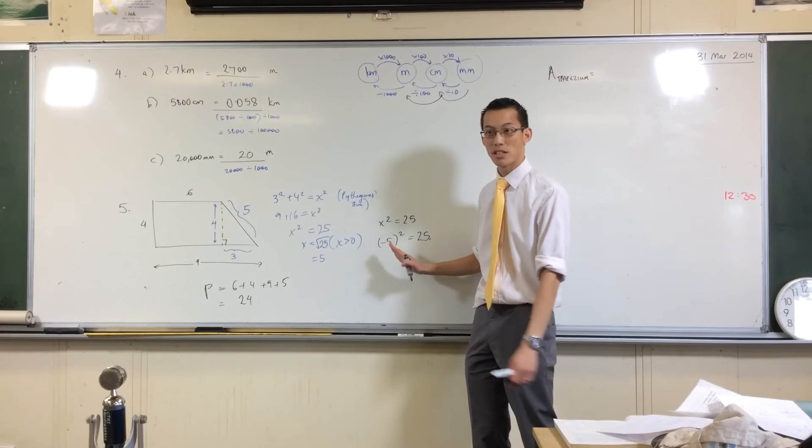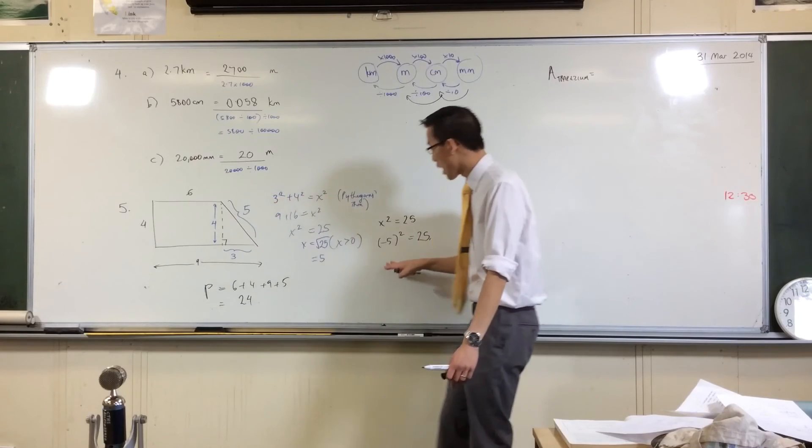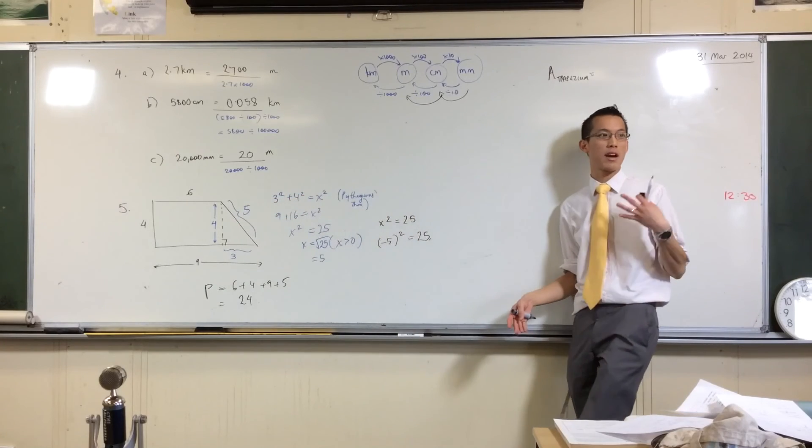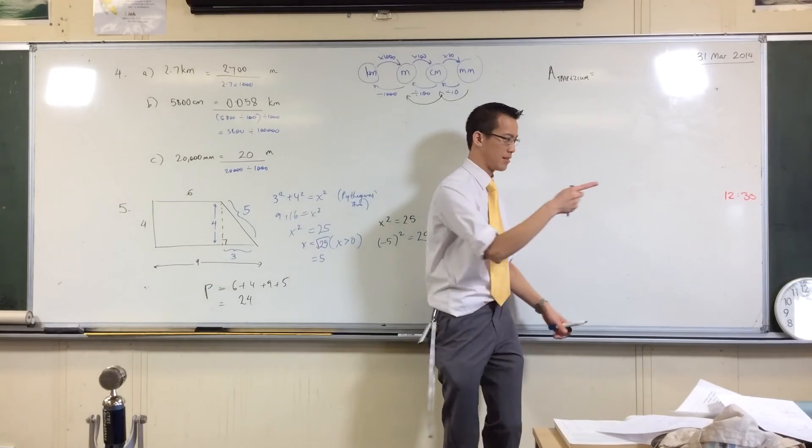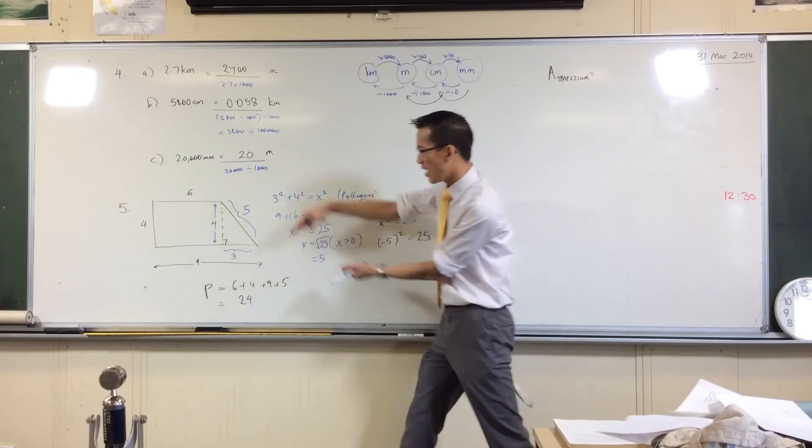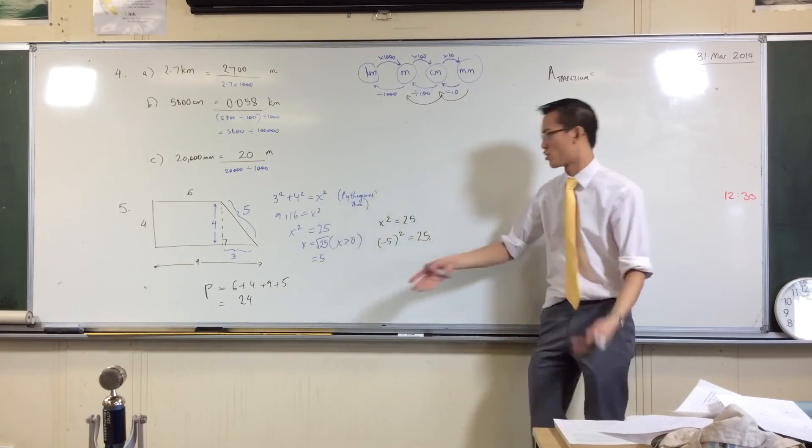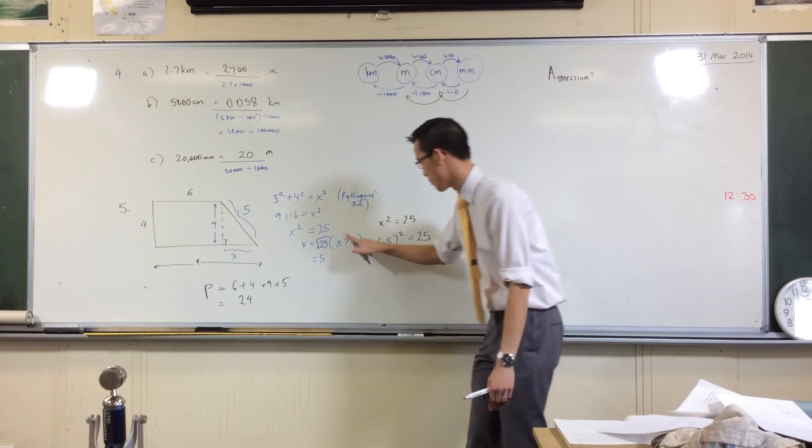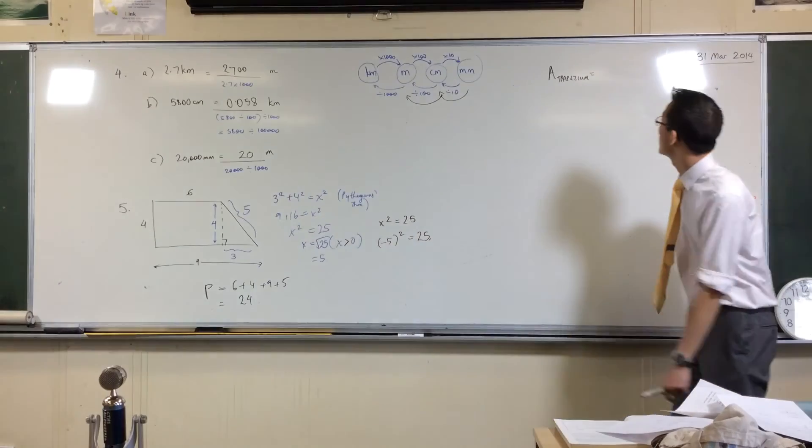The reason I know it can't be negative five is because I'm talking about a distance here. Sometimes negative five is meaningful, like for temperature or location - five might mean right and negative five might mean left. But here I just want to know how long the thing is. You can't be negative five long. It's just going to be that one.